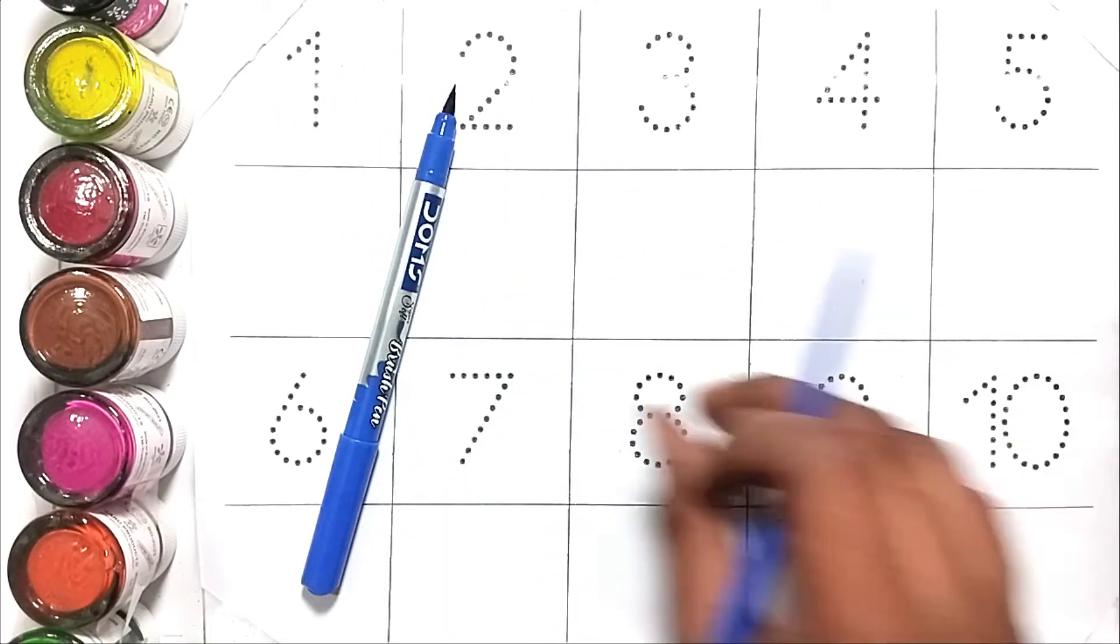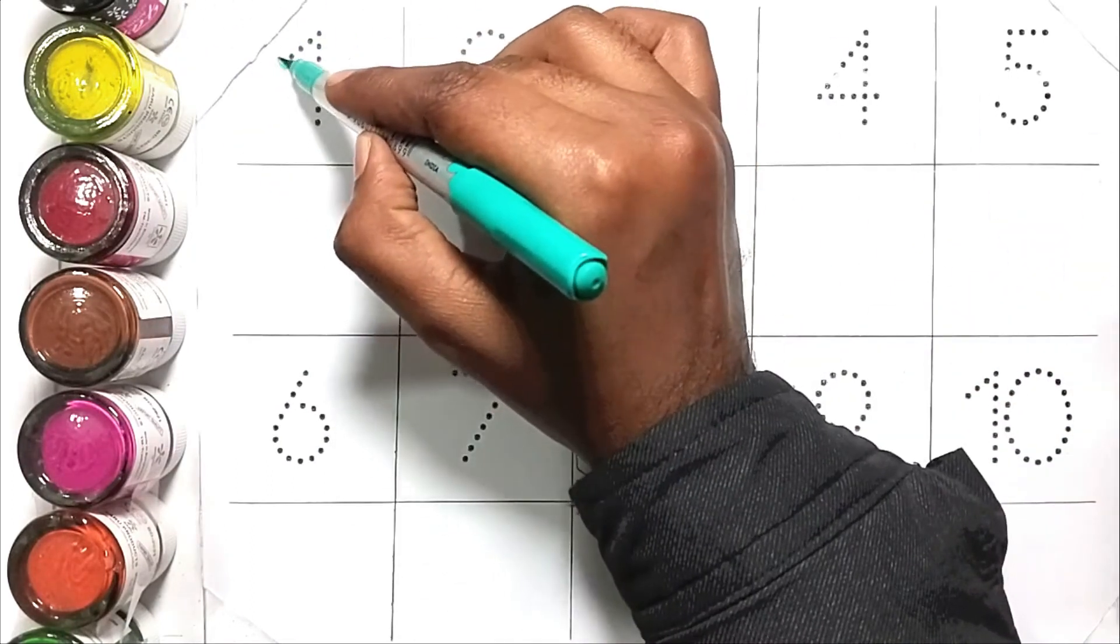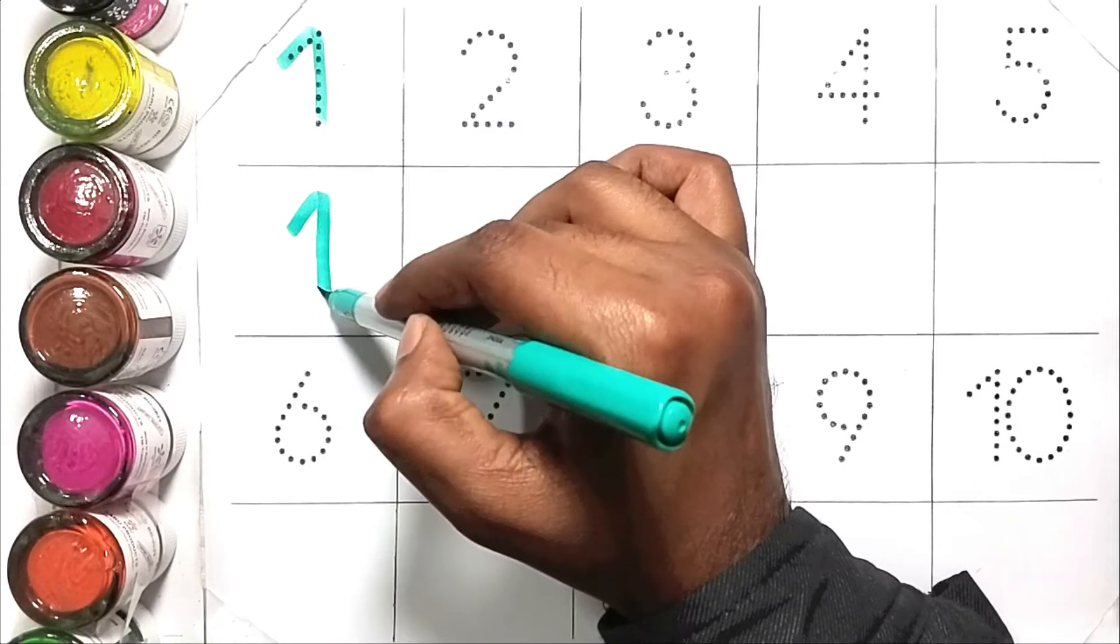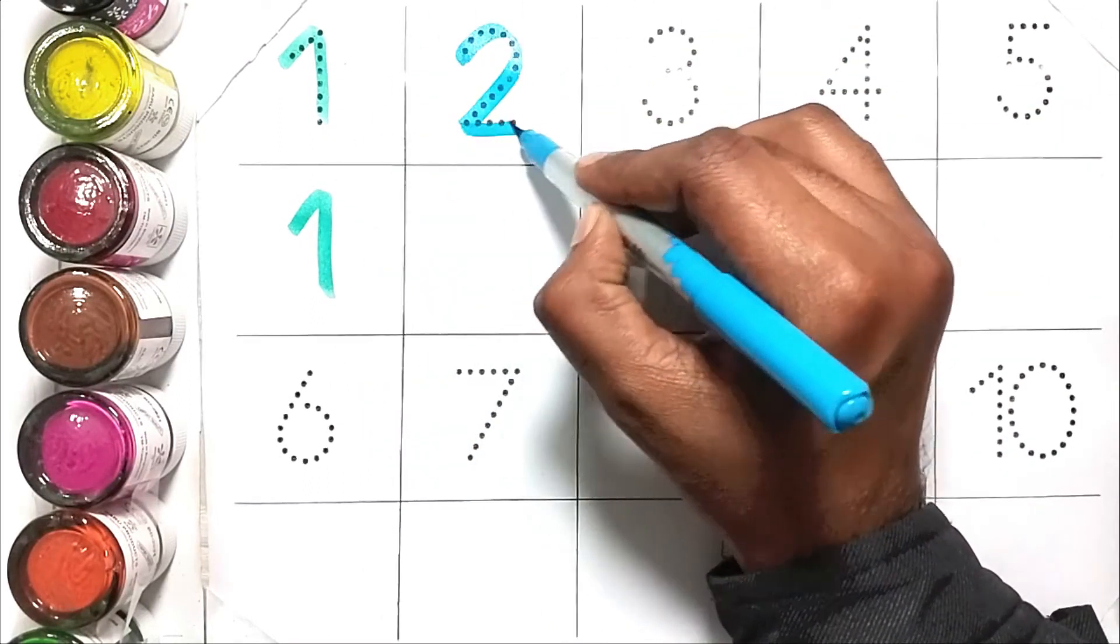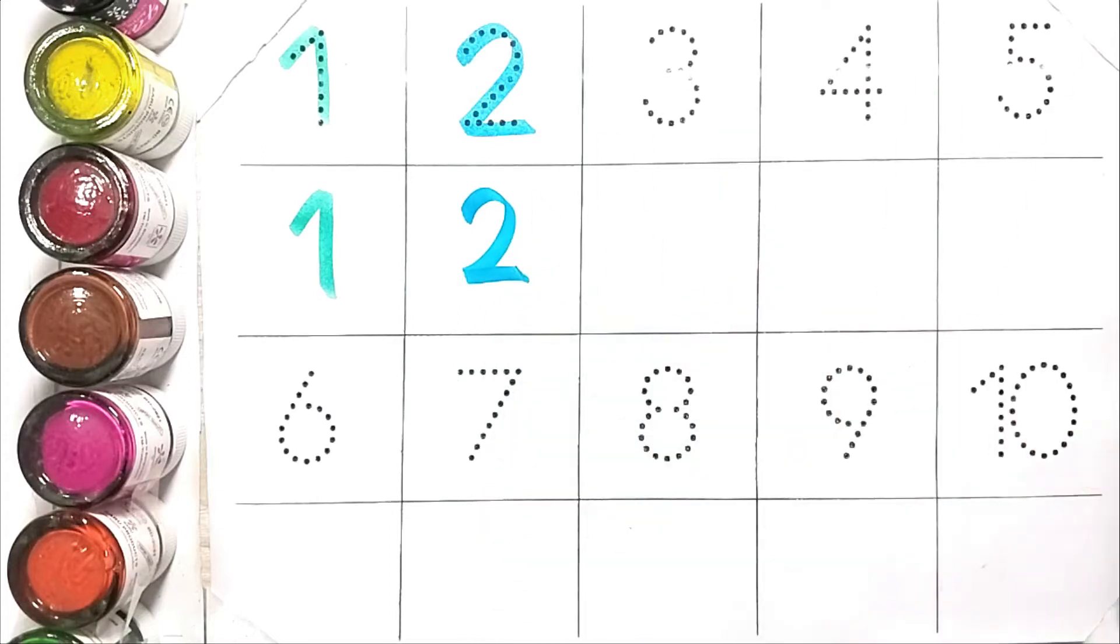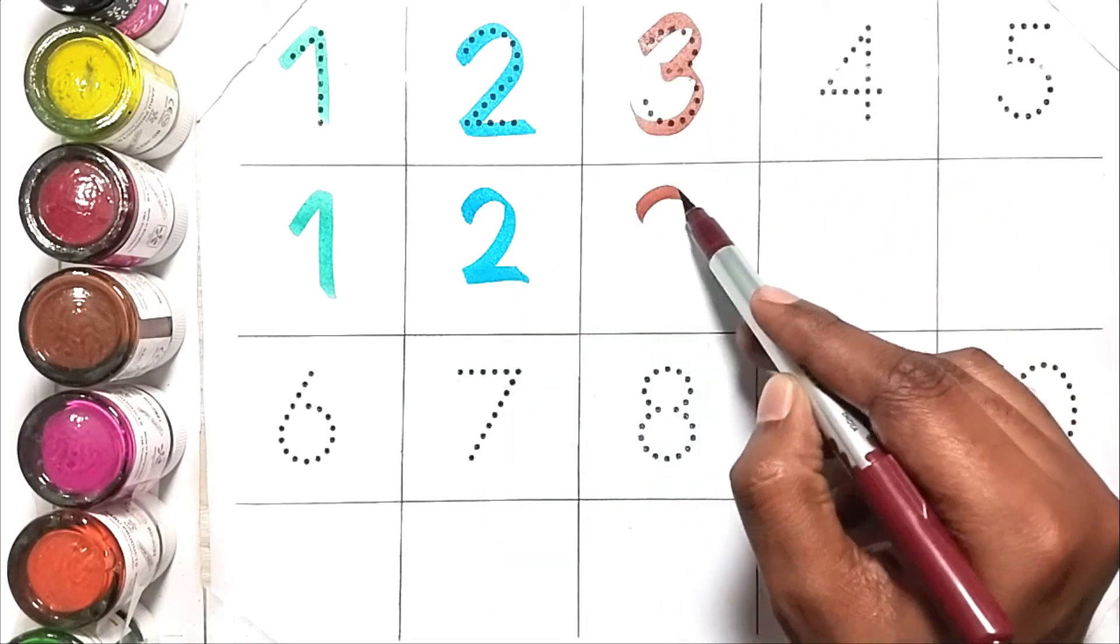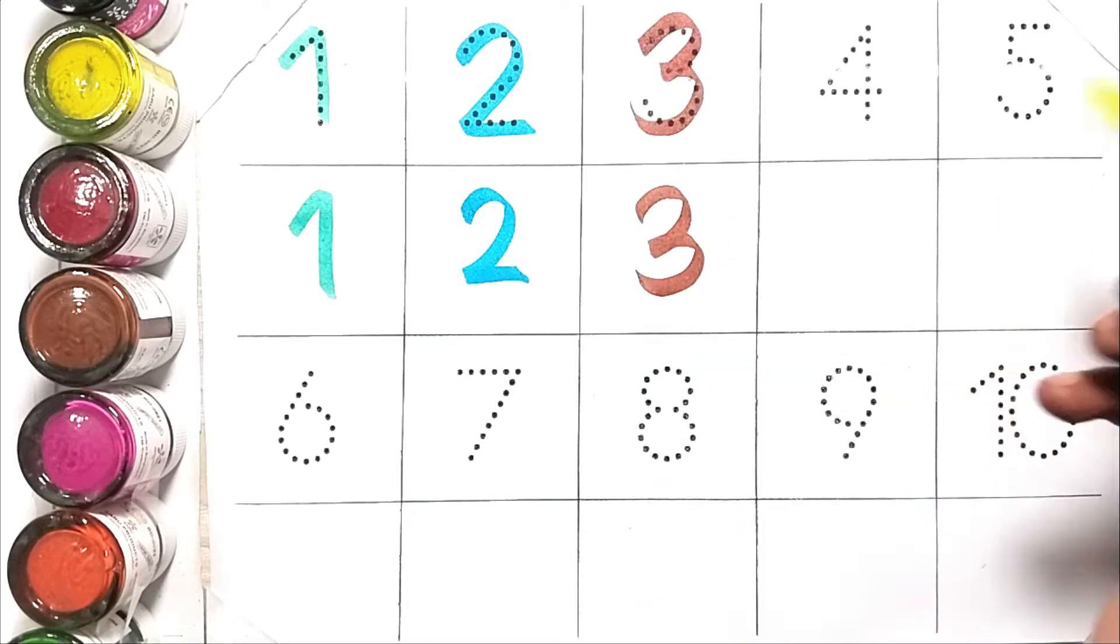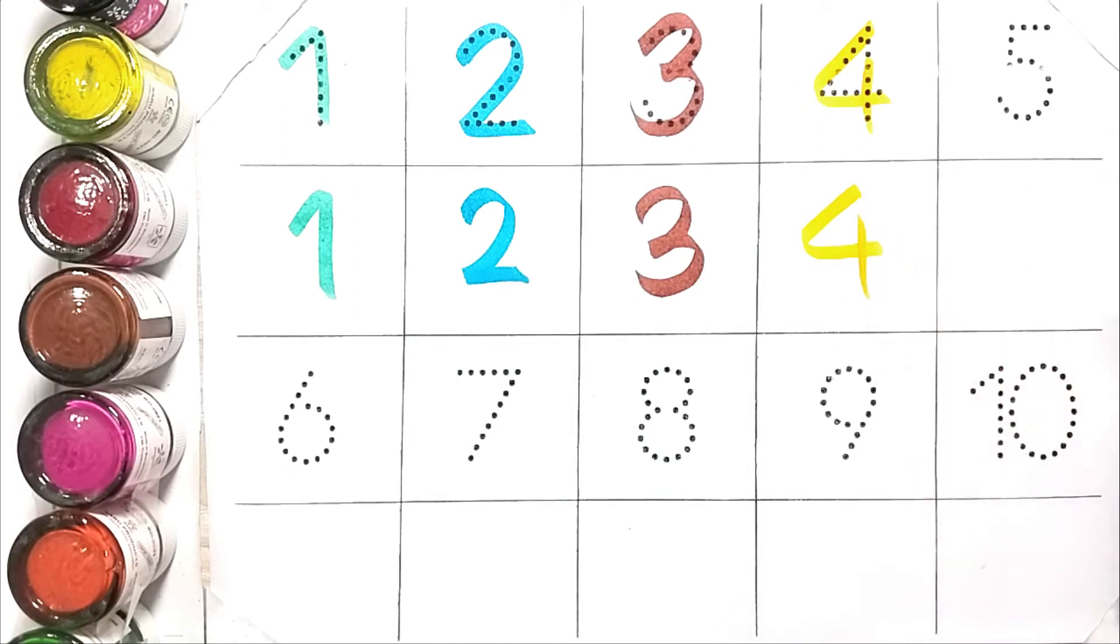Purple color, blue color. One, one. Two, T-W-O, two. Three, T-H-R-E-E, three. Four, F-O-U-R, four.